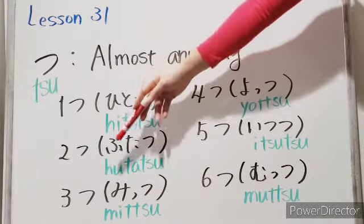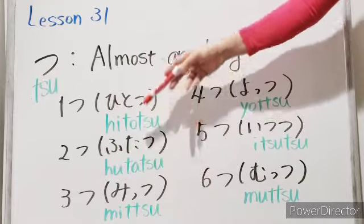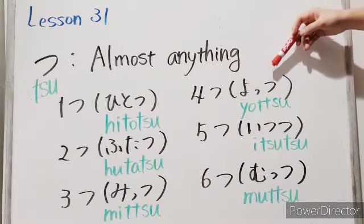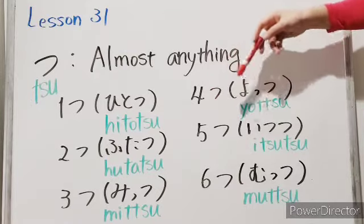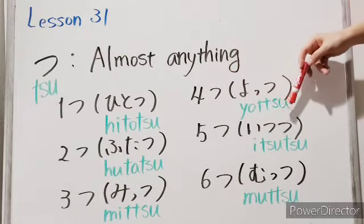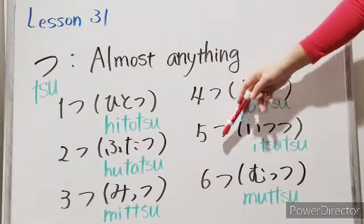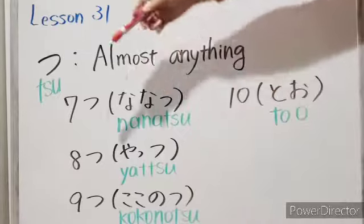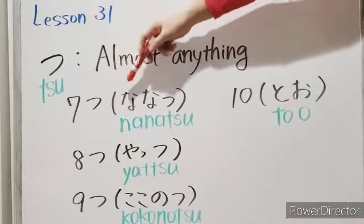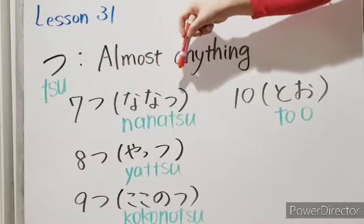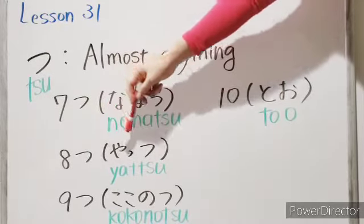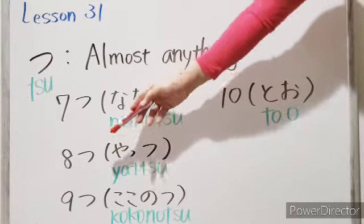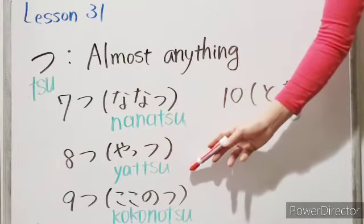Three — mittsu. Four — yottsu. Five — itsutsu. Six — muttsu. Seven — nanatsu. Eight — yattsu. Nine — kokonotsu.